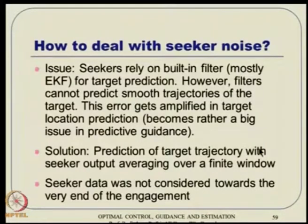After putting the adaptive control into action, the miss distance comes back within 1–3 meters — essentially zero miss distance. There is another issue regarding how to deal with seeker noise, because no matter what Kalman filter you put, there will be some residual error that propagates into the guidance loop.